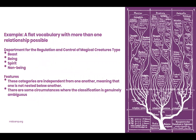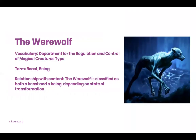Here's another example: a flat vocabulary where more than one relationship is possible. We created a vocabulary for the Department of Regulation and Control of Magical Creatures type — beast, being, and spirit divisions, plus non-being. These categories are independent from one another, but some classifications can be genuinely ambiguous. Take the werewolf: the vocabulary is the creature type, but the terms are both beast and being. The werewolf is classified as both, depending on its state of transformation — a beast in wolf shape, but a being when human.